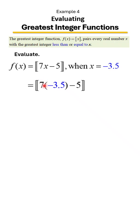So seven times negative 3.5, which is going to equal negative 24.5. And now we're going to combine negative 24.5 with negative 5.